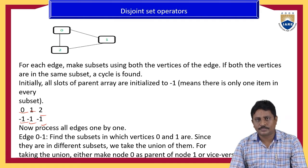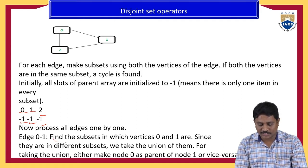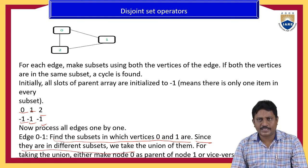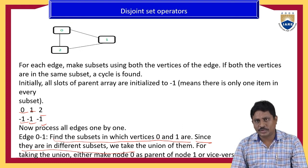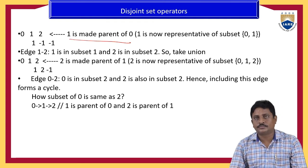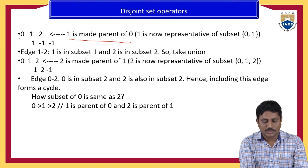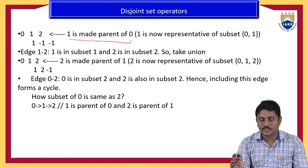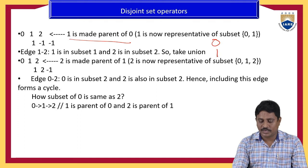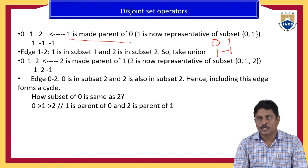Now process all these edges one by one. Edge zero to one: find the subsets in which vertices zero and one are present. Since they are in different subsets, we take the union of them. For taking the union, we make either node zero or node one as parent node. Here, one is made as the parent of zero. So zero's parent node is one, one is the parent node represented with minus one, and two is another parent node represented with minus one.